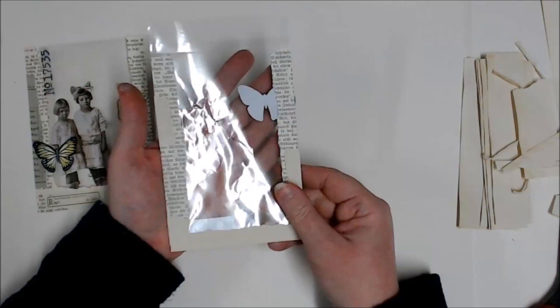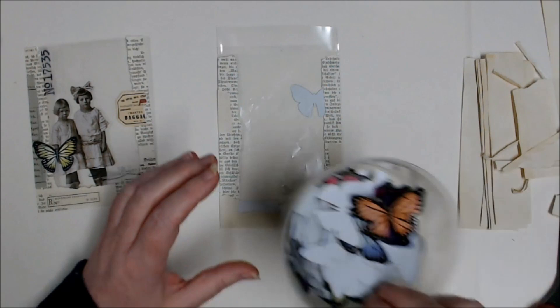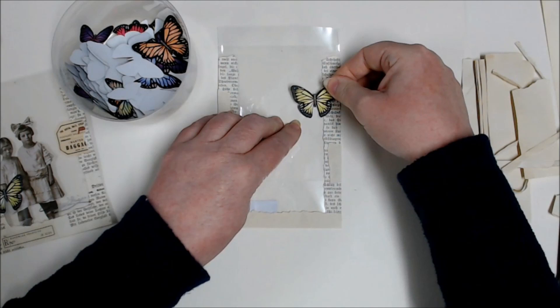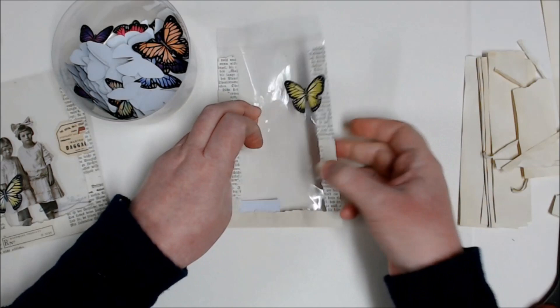If I wanted to make it double-sided, I could take another butterfly that's the same size and I can glue that one straight over the top.